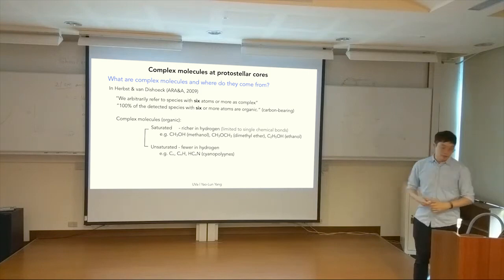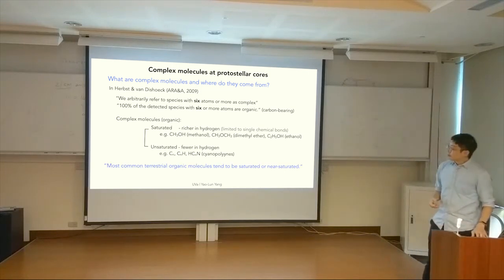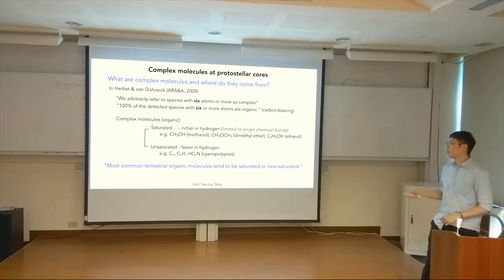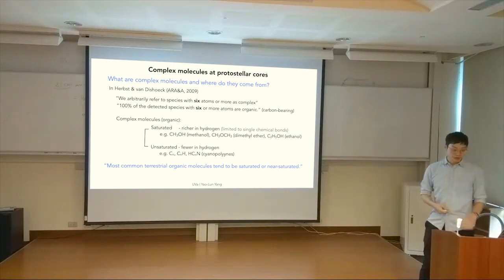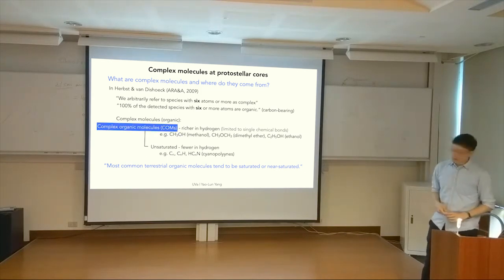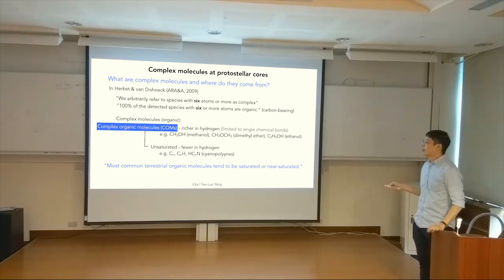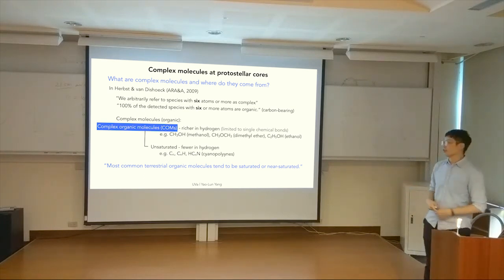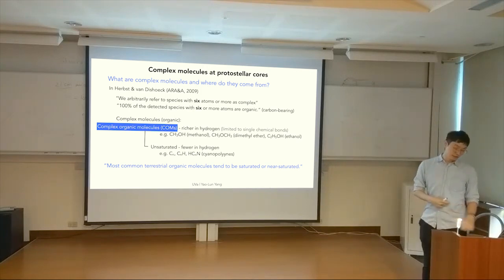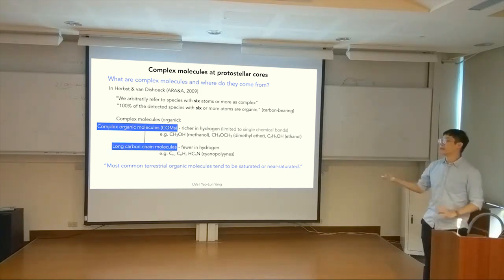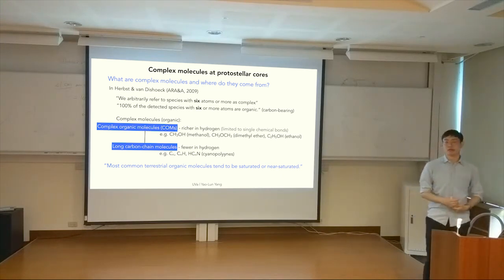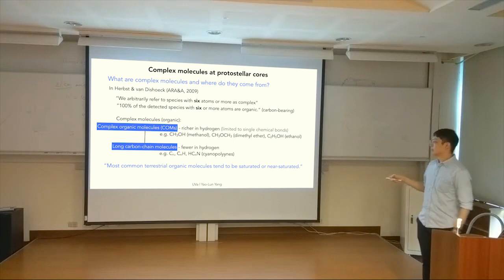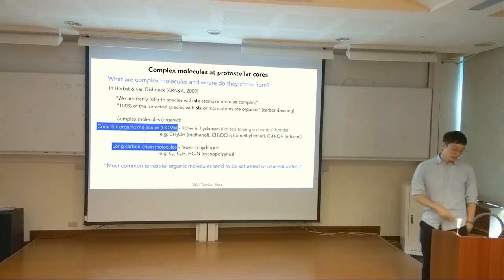In today's talk I will primarily focus on the saturated ones. Most terrestrial organic molecules tend to be saturated - we don't really see very long carbon chain molecules on Earth. People typically call the saturated molecules 'complex organic molecules,' while the unsaturated ones - which by definition are also complex and organic - are usually called carbon chain molecules or long carbon chain molecules to emphasize the difference between saturated and unsaturated.